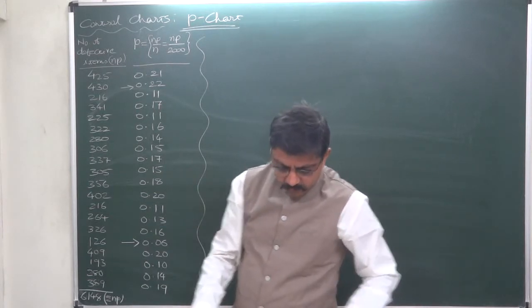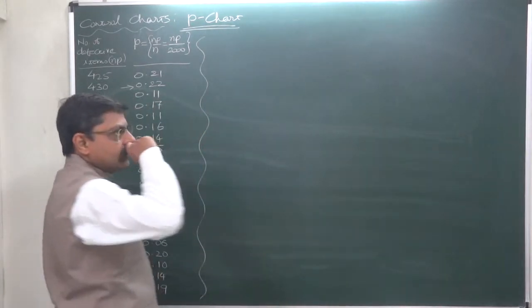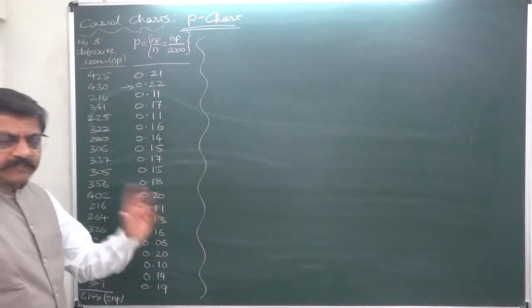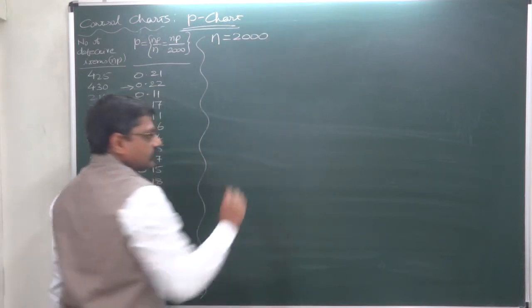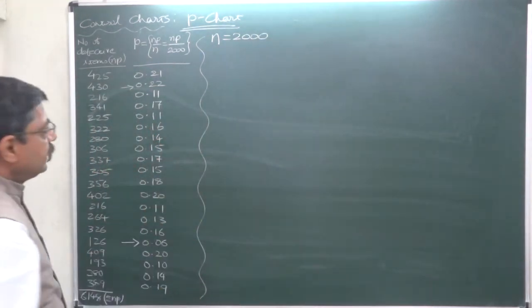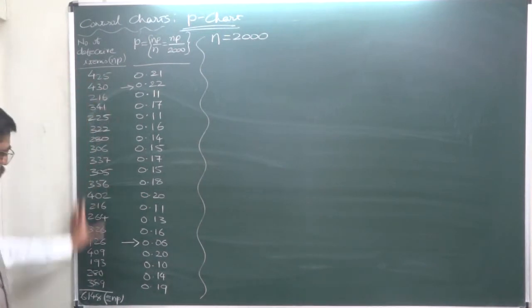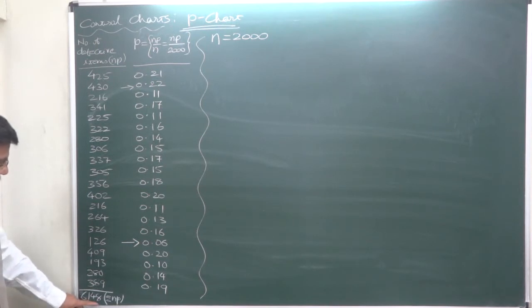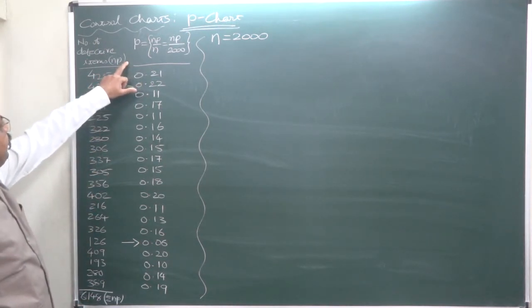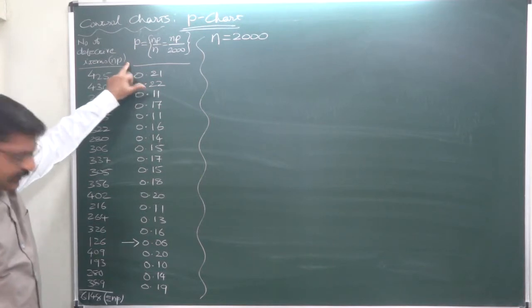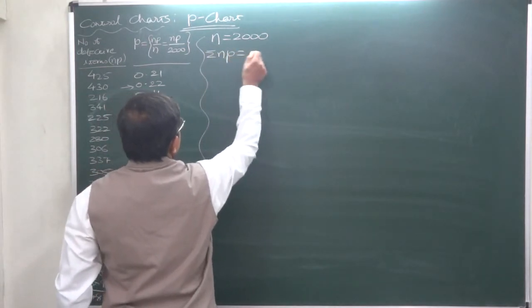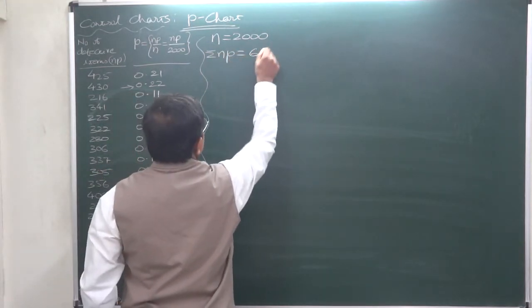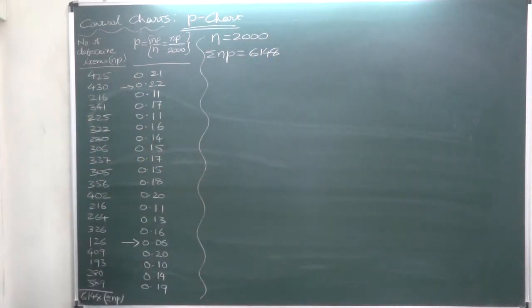These are the number of defective articles in each and every sample that is made up of 2000 articles. Now, two things are clear. First, each and every sample is made up of 2000 items. Later on we shall read it. Now, these are the number of defective units in each and every sample and the sum is 6148. The sign used for defective items is NP and this is summation of the NP. That's why we can use the sign Sigma NP, which equals 6148.